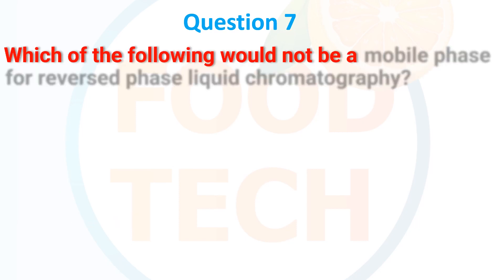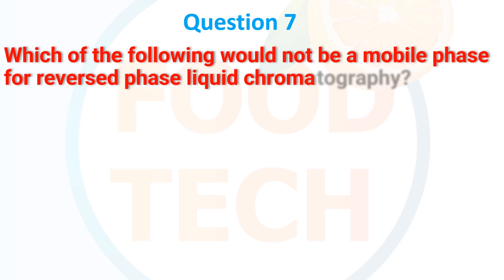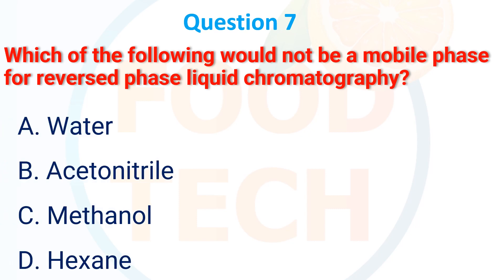Which of the following would NOT be a mobile phase for reverse phase liquid chromatography? A. Water, B. Acetonitrile, C. Methanol, D. Hexane. The correct answer is A: water.